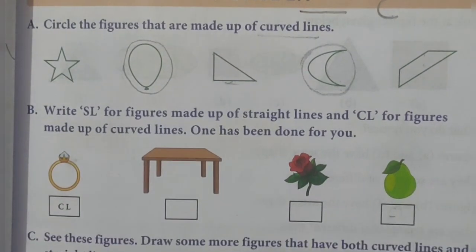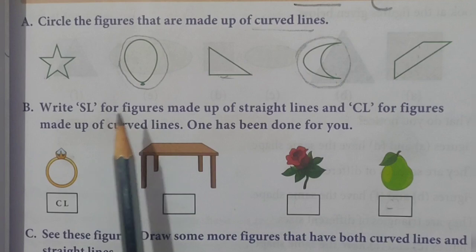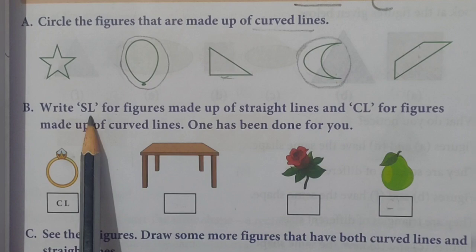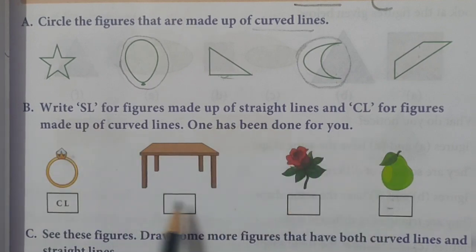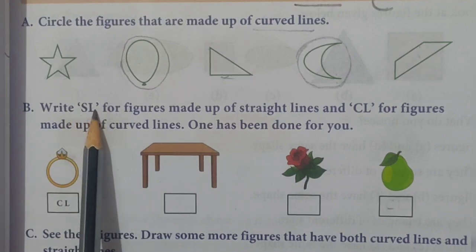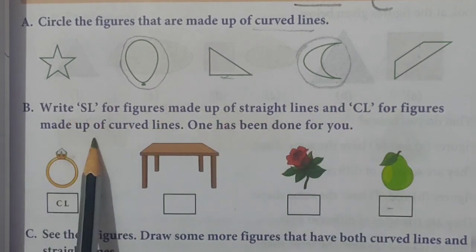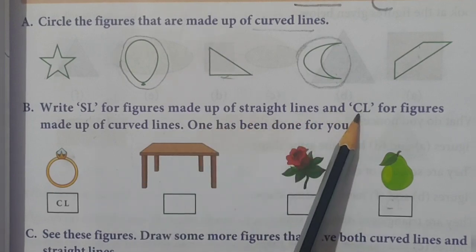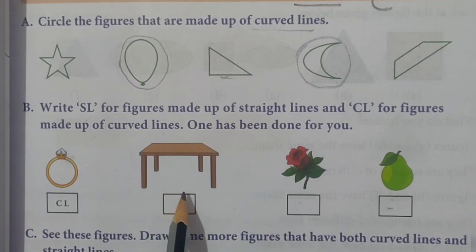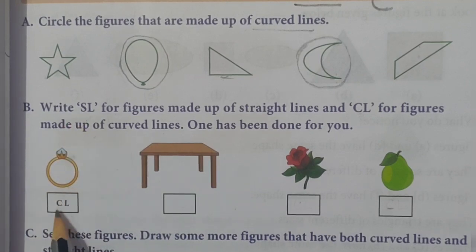Next, see Question B: write SL for figures made up of straight lines. We have to write SL for figures that have only straight lines and no curved lines. Already one example is given — this ring is made up of curved lines, so we do not write SL there.